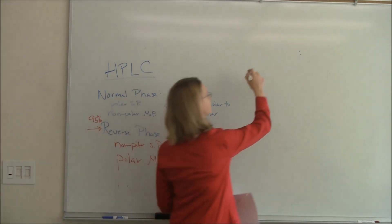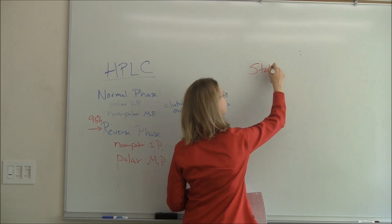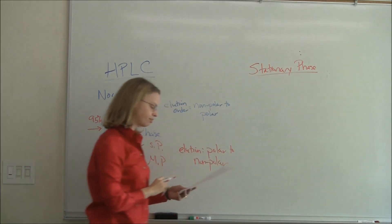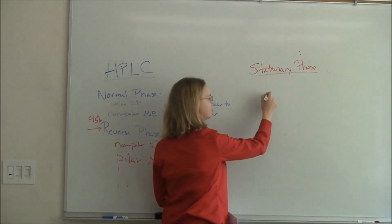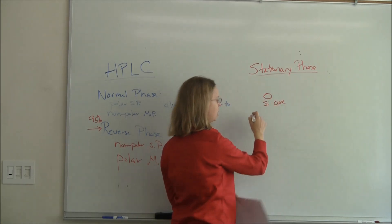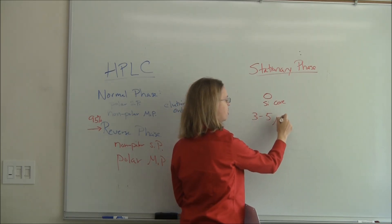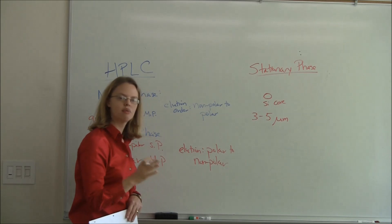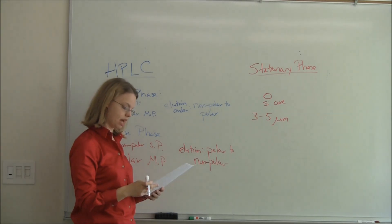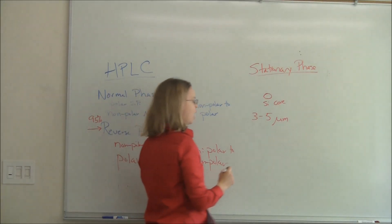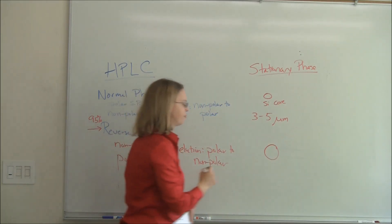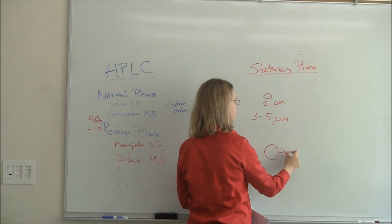Let's talk just a little bit about the stationary phase, thinking about what's actually in that instrument that we really can't see. The most common stationary phases have a silica particle kind of as its core. And typically, these particles are somewhere in the three to five micron diameter range. One of the things they're doing nowadays is pushing to smaller particles.